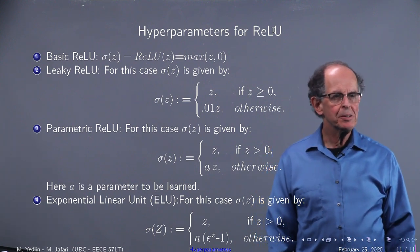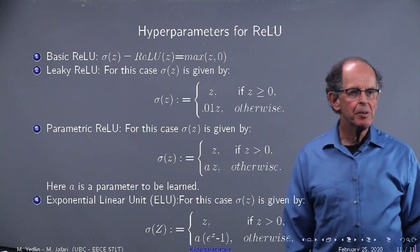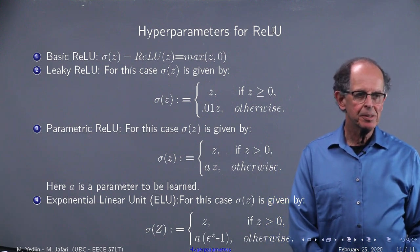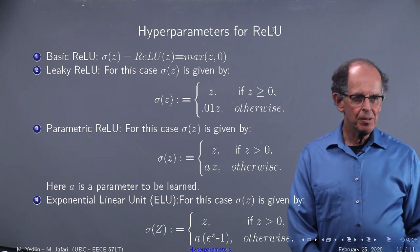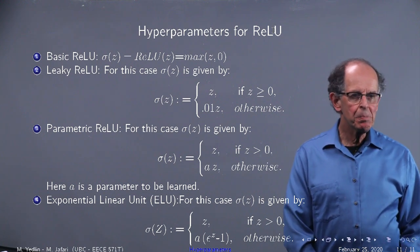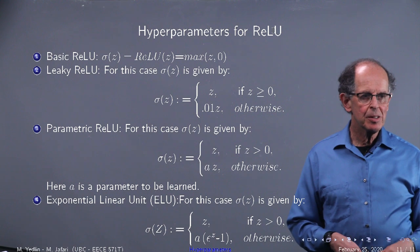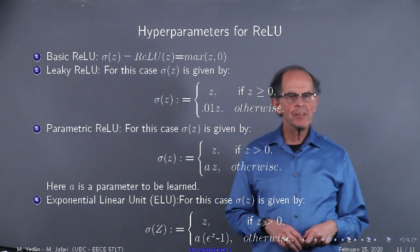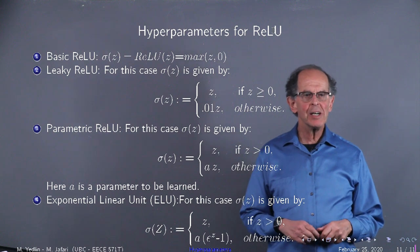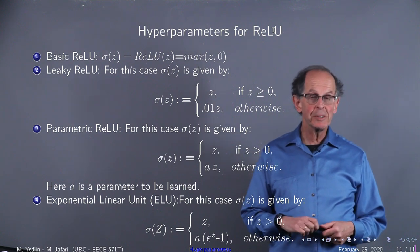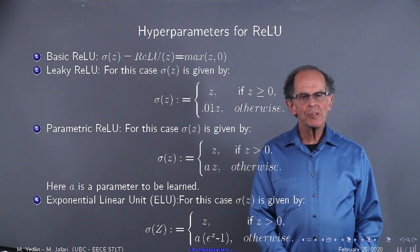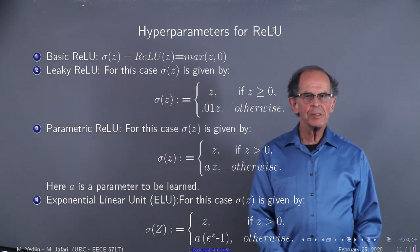Parametric ReLU, it looks like Leaky ReLU but a you have to learn. So it's another parameter. You don't choose it, you learn it. And another popular one for negative z is the exponential linear unit. So that's it for our discussion of all the hyperparameters or a great number of the hyperparameters that you need when you are setting up and training your neural network.